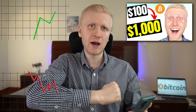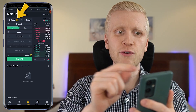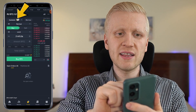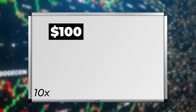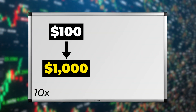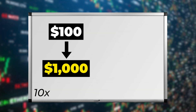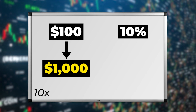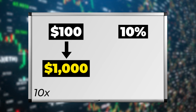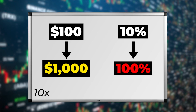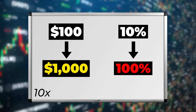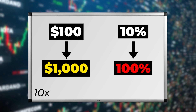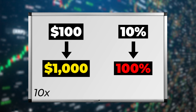As you learned in my previous margin trading video, your profits and your losses will be amplified when you use margin. If you use 10x leverage on the Binance app, a $100 profit becomes a $1,000 profit. But on the flip side, a 10% loss would be a 100% loss if you are using 10x leverage. So you must know what you are doing.